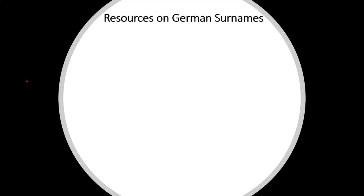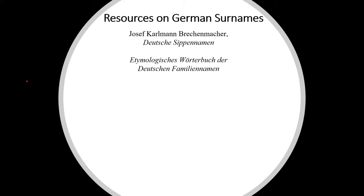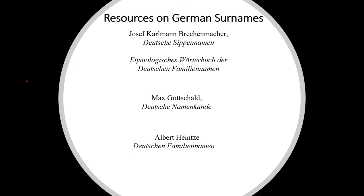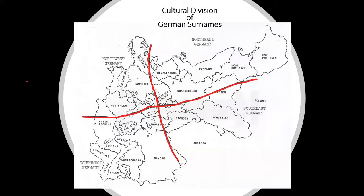Resources on German surnames. Many excellent resources on German surnames are available. They provide an etymology of the name and show variations. Joseph Karlmann Brechemacher has two books: Deutsche Zippennamen, or German Family Names, and the Etymologische Wörterbuch der Deutschen Familiennamen, the etymology dictionary of German surnames. Max Gottschalt's book is Deutschen Namenkunde, and Albert Heinze's book is the Deutschen Familiennamen. There is a German saying: Tell me your name and I will tell you where you are from.